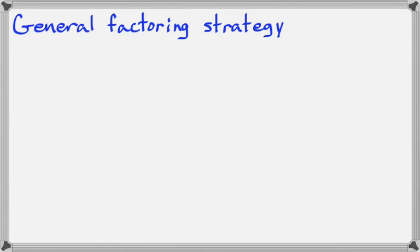In this lesson, we're going to talk about a general factoring strategy — in other words, when you see a factoring problem, how do you know how to approach it and what to try first? Because we've learned several different methods of factoring: factoring out the greatest common factor, how to factor trinomials, how to factor by grouping, and how to factor difference of squares, difference of cubes, and sum of cubes. So when you see a problem, how do you identify it so that you can apply the right method?